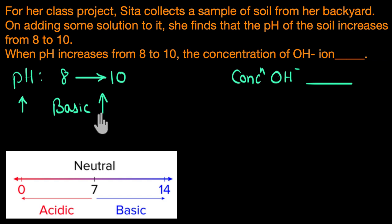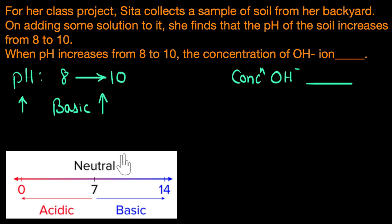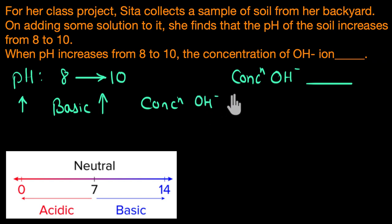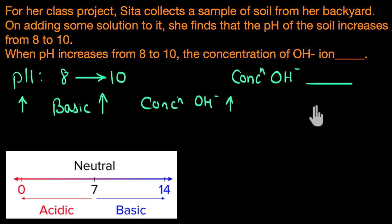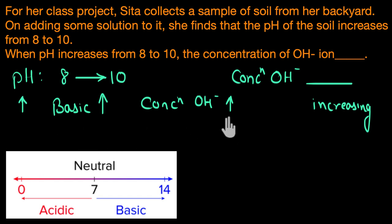Based on this, what can we say about the concentration of OH⁻ ion? We know that basic solutions have excess of OH⁻ ion. If a solution is becoming more basic, the amount of OH⁻ ion is increasing in the solution — the concentration of OH⁻ ion should be increasing, because the basic nature is dependent on the concentration. The more the concentration of OH⁻, the more basic the solution is. So the answer is: the concentration of OH⁻ ion is increasing.